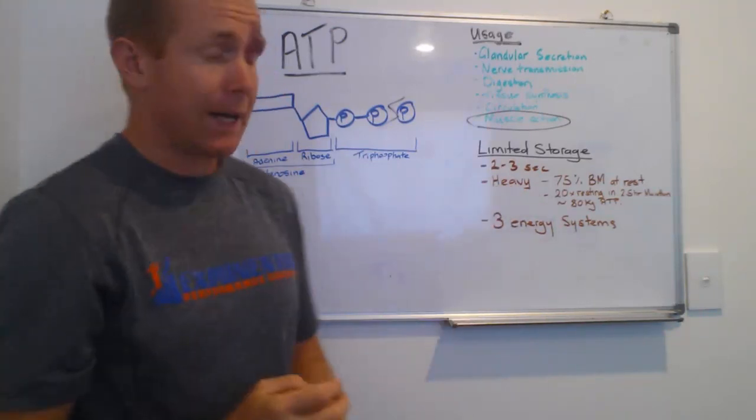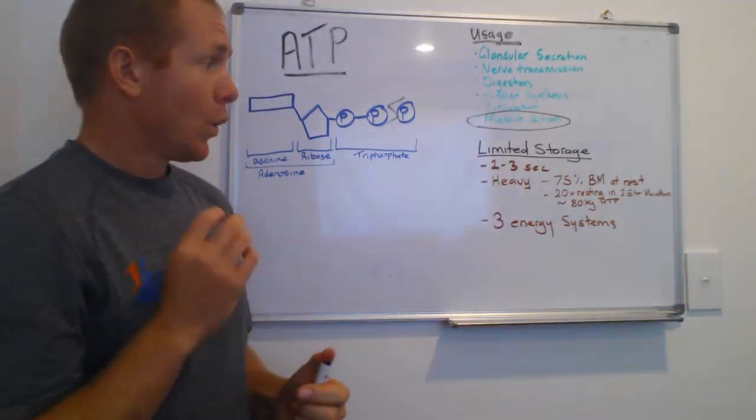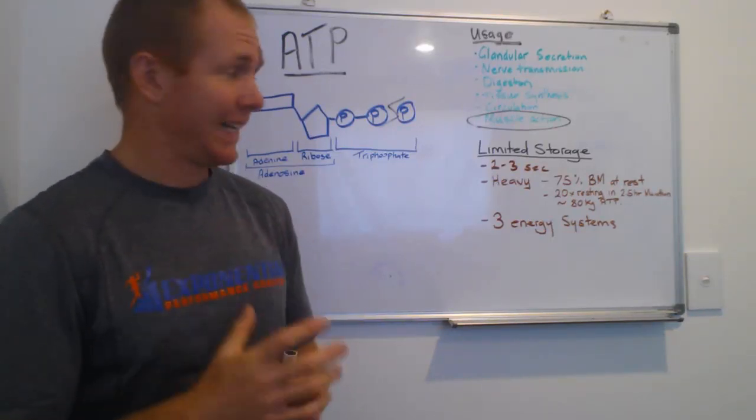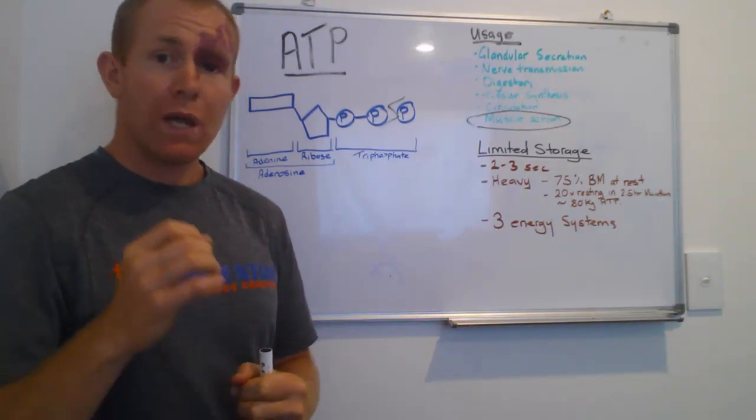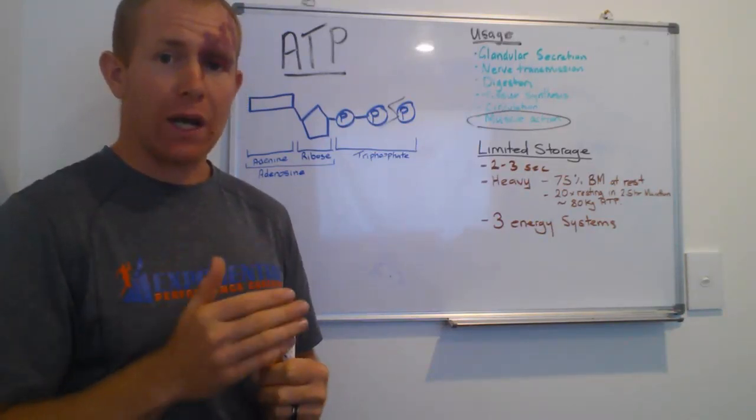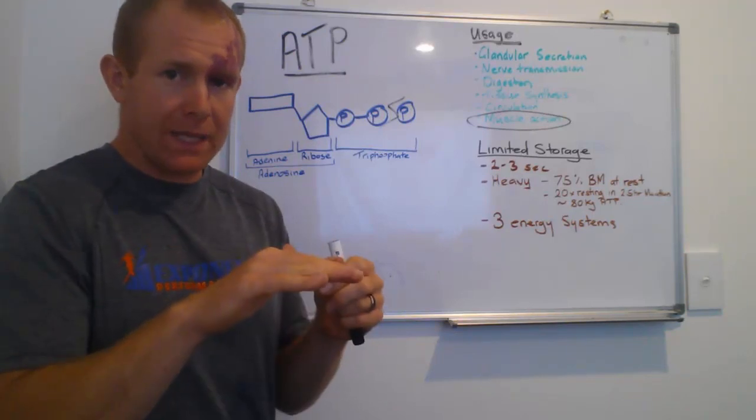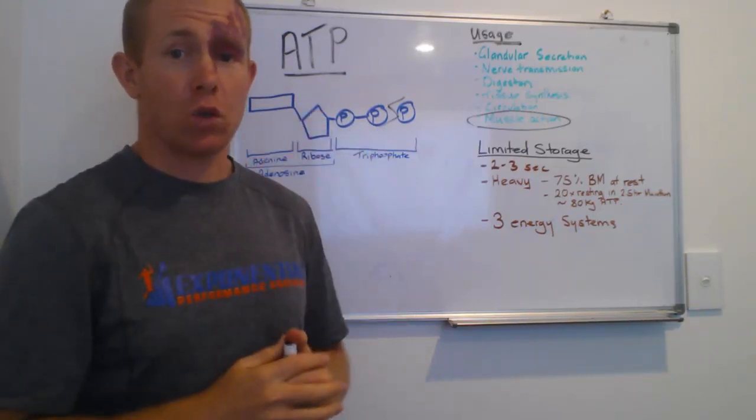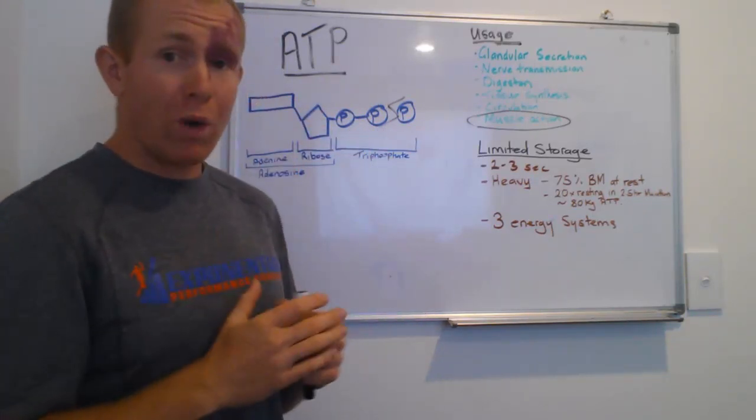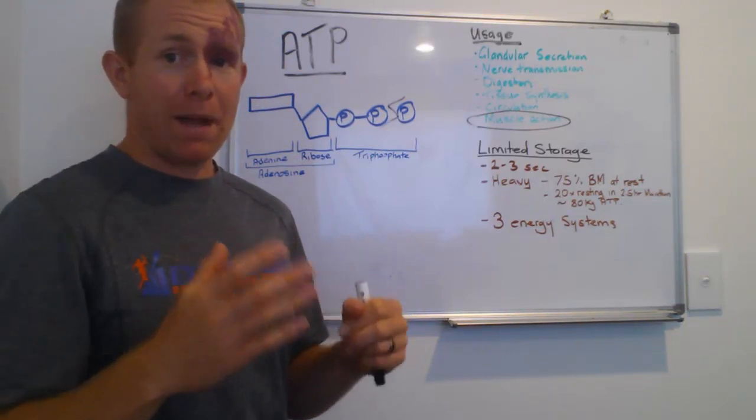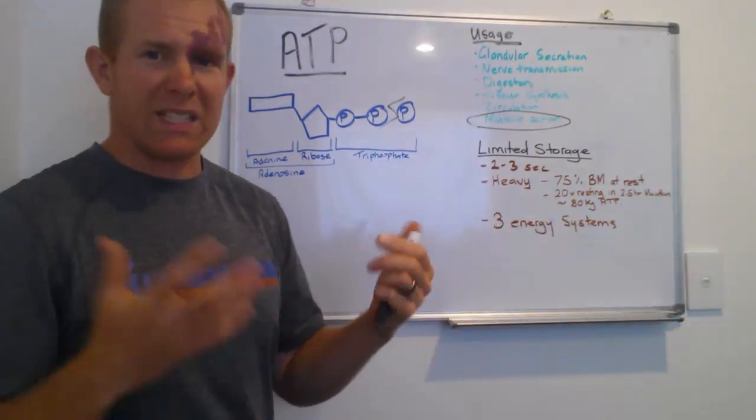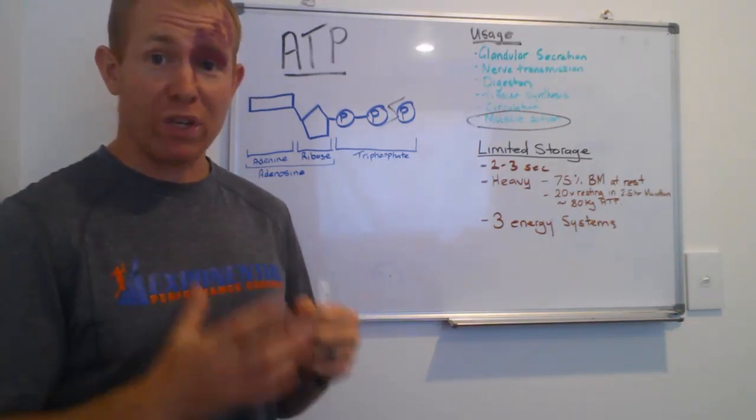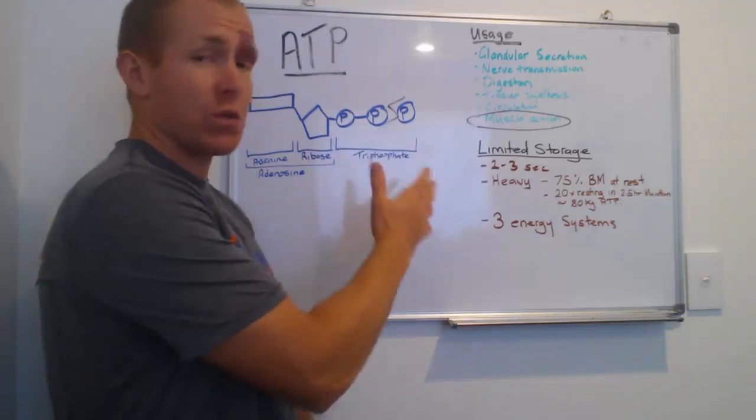If we have a think about running a marathon, when you run a marathon around about that two and a half hour mark, so relatively hard exercise, you use about 20 times your resting metabolism. So your resting metabolism is here, run a marathon at two and a half hour pace, hard exercise, you're using about 20 times more energy. So to run a two and a half hour marathon would require approximately, depending on your weight, about 80 kilos of ATP. So you can see it's really, really heavy, and that's why we don't store it.